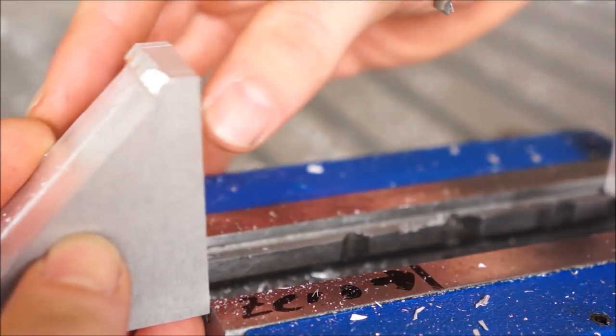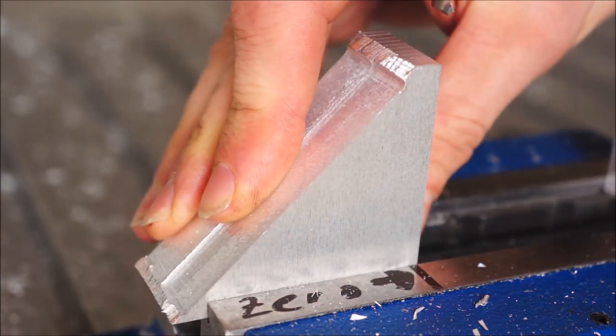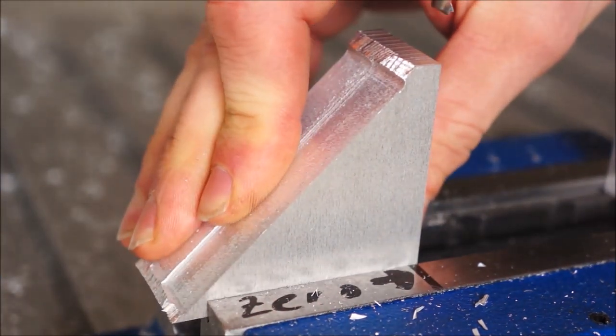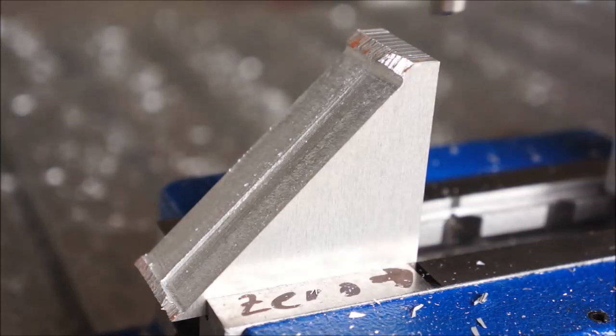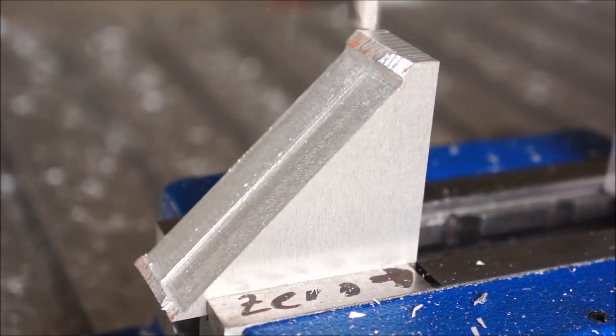Now let's machine the steps. I've put a little mark on the vise, so I just need to zero once. Afterwards, the parts are just aligned to the mark. The pen can easily be removed with alcohol.